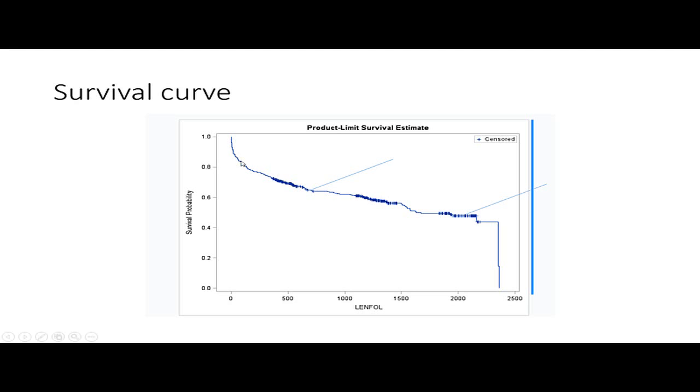The probability that somebody is going to survive beyond time 500 is 0.6, and beyond 1700 is 0.4. In other words, 60% of the population are going to survive beyond time 500, and 40% of them are going to survive beyond time 2000. That's how we interpret a survival curve.